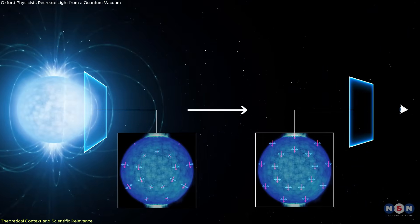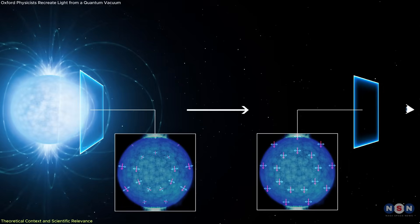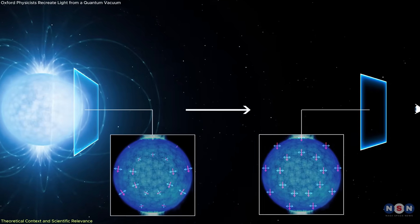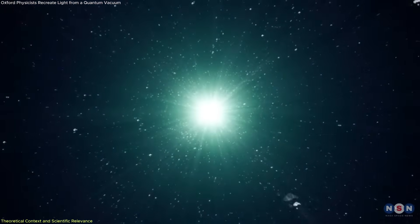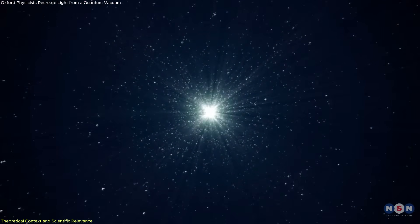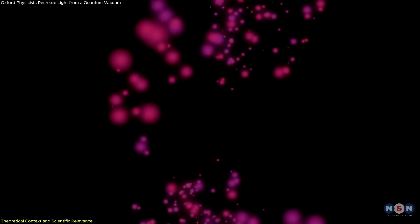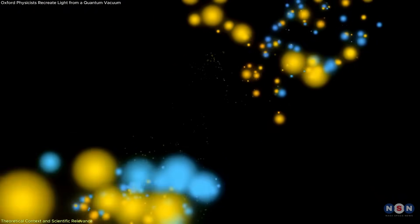One such effect is vacuum birefringence, where the polarization of light changes as it passes through a strong electromagnetic field, even in the absence of matter. The simulation replicated this behavior, demonstrating how the vacuum becomes optically active under extreme conditions.